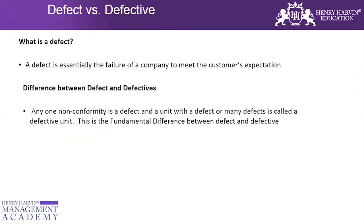In the Measure phase of Six Sigma, we have answered the first three questions: what to measure, how to measure, and how to ensure what we measure is correct. Now we need to understand the concept of defect versus defective. A defect is the failure to meet a customer expectation. A defective is a unit that contains one or more defects.